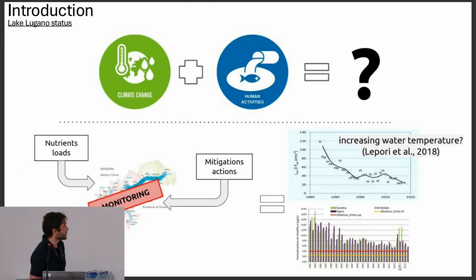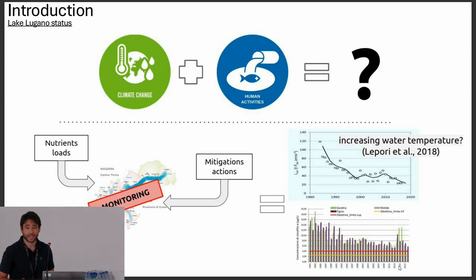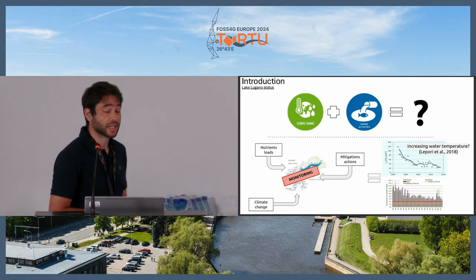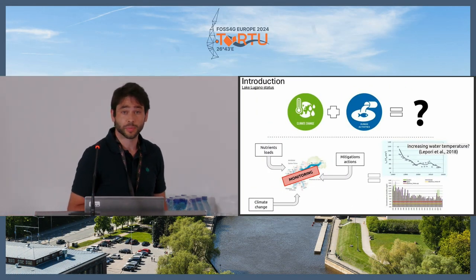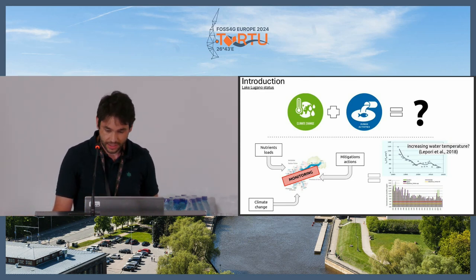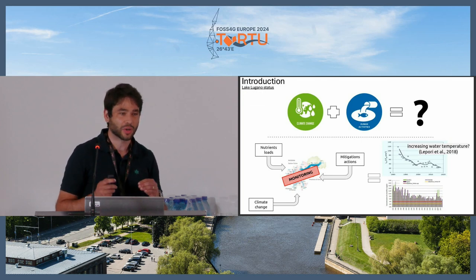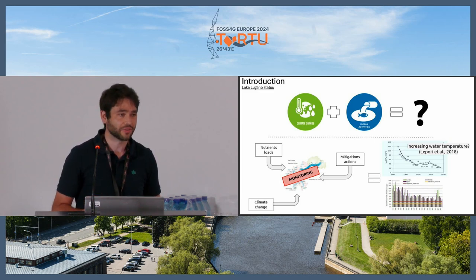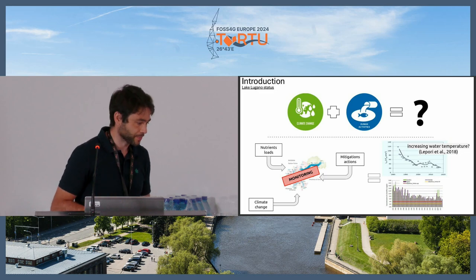Lake Lugano is affected by two elements: climate change plus human activities, which are causing unknown dynamics that have to be studied — so there is also a need for monitoring. The lake is in a recovery status, because from the 1970s there have been many mitigation actions to recover its health. But now we have reached a stagnation, probably due to climate change effects, where the rise of temperature is having negative feedbacks on this recovering status.